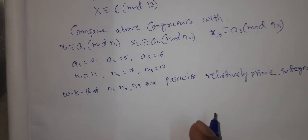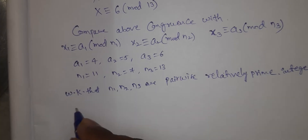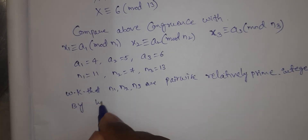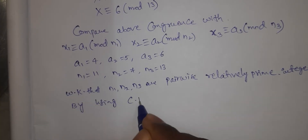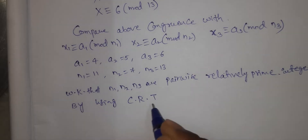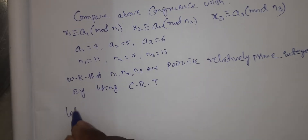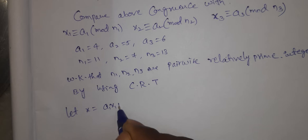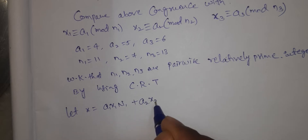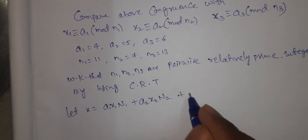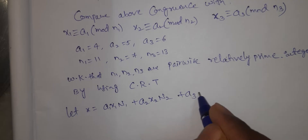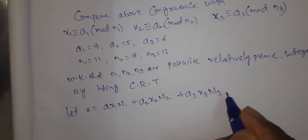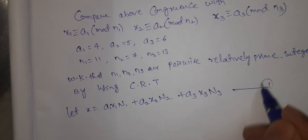By using the Chinese Remainder Theorem, let x = a1·x1·N1 + a2·x2·N2 + a3·x3·N3. This is equation number one.